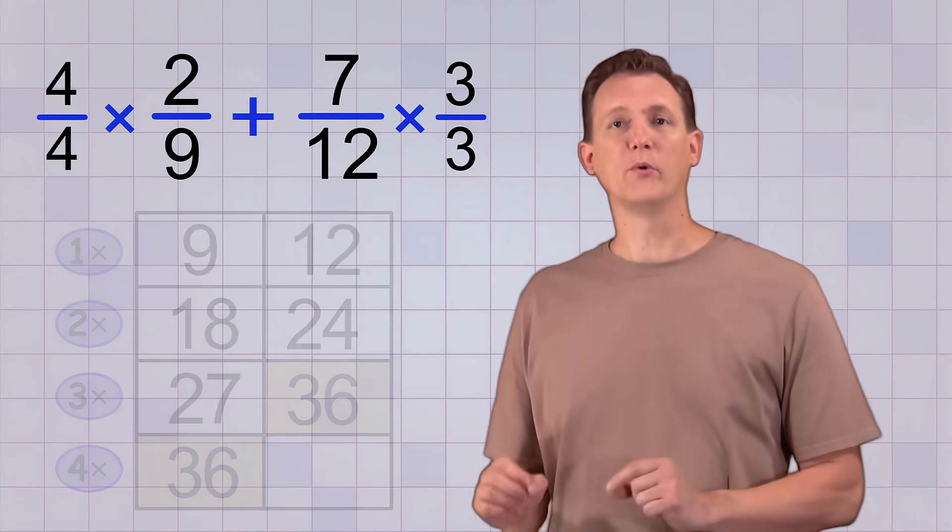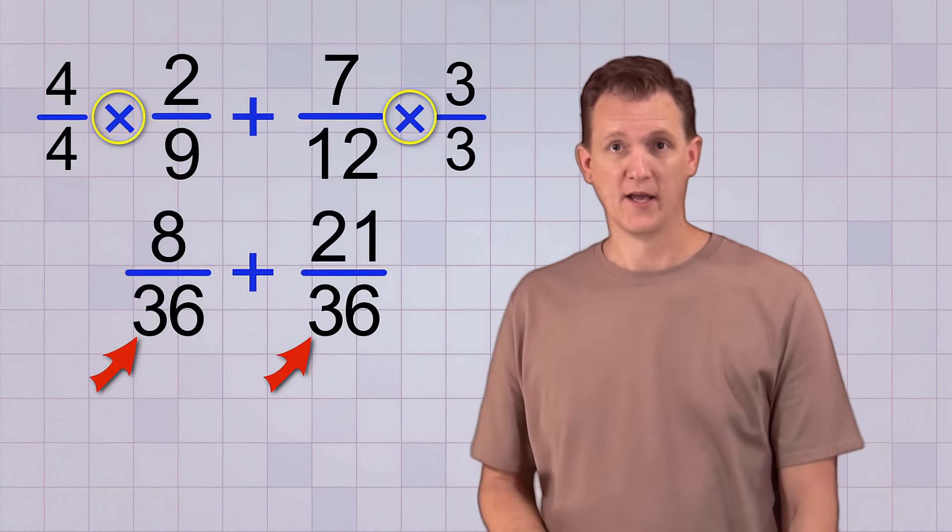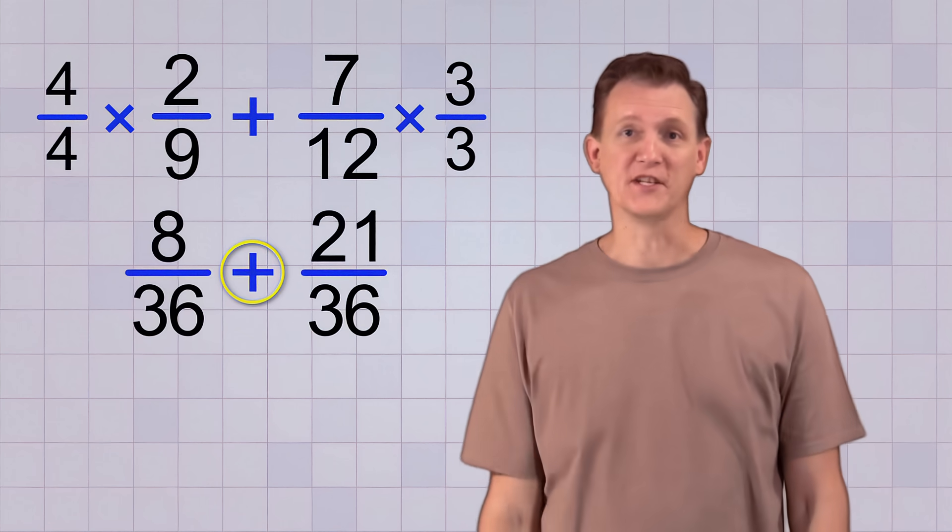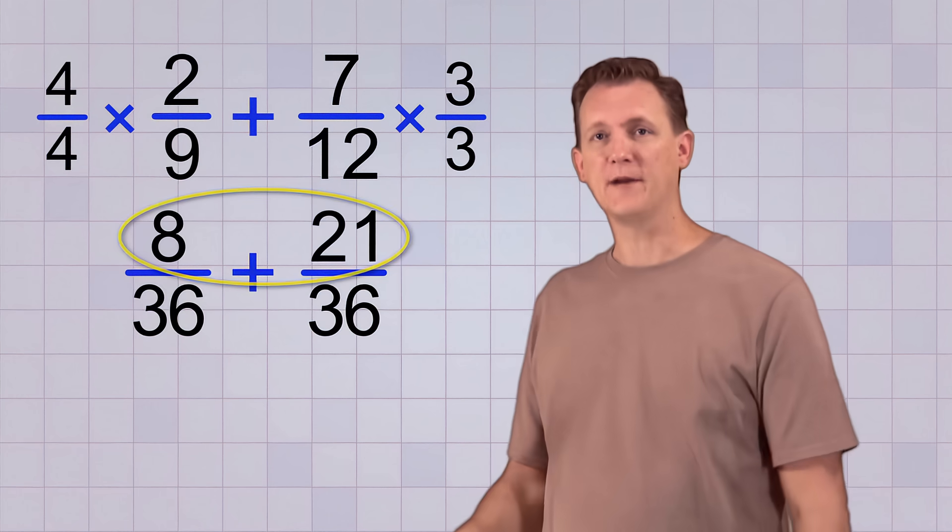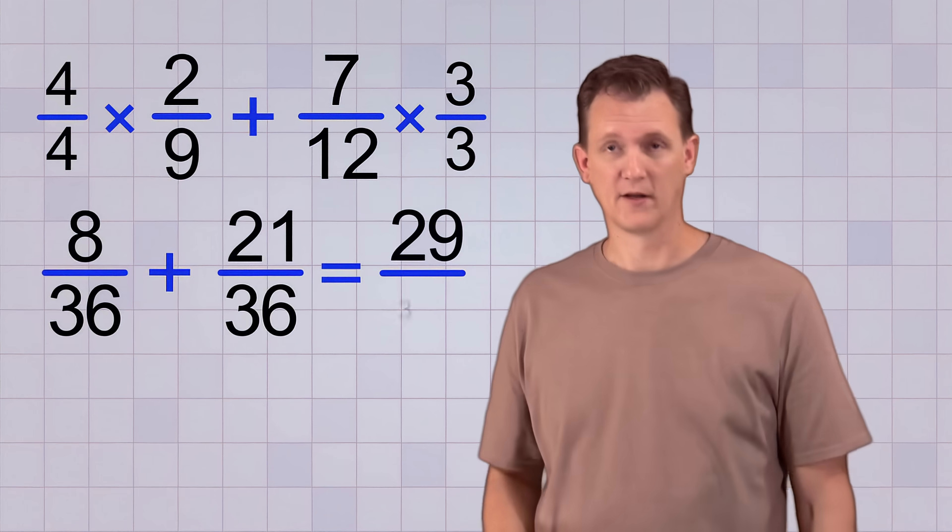There! Now when we multiply, we get two new but equivalent fractions that have a common denominator. Now we can add them with our simple procedure. On the top, 8 plus 21 equals 29, and we keep the same bottom number, 36.